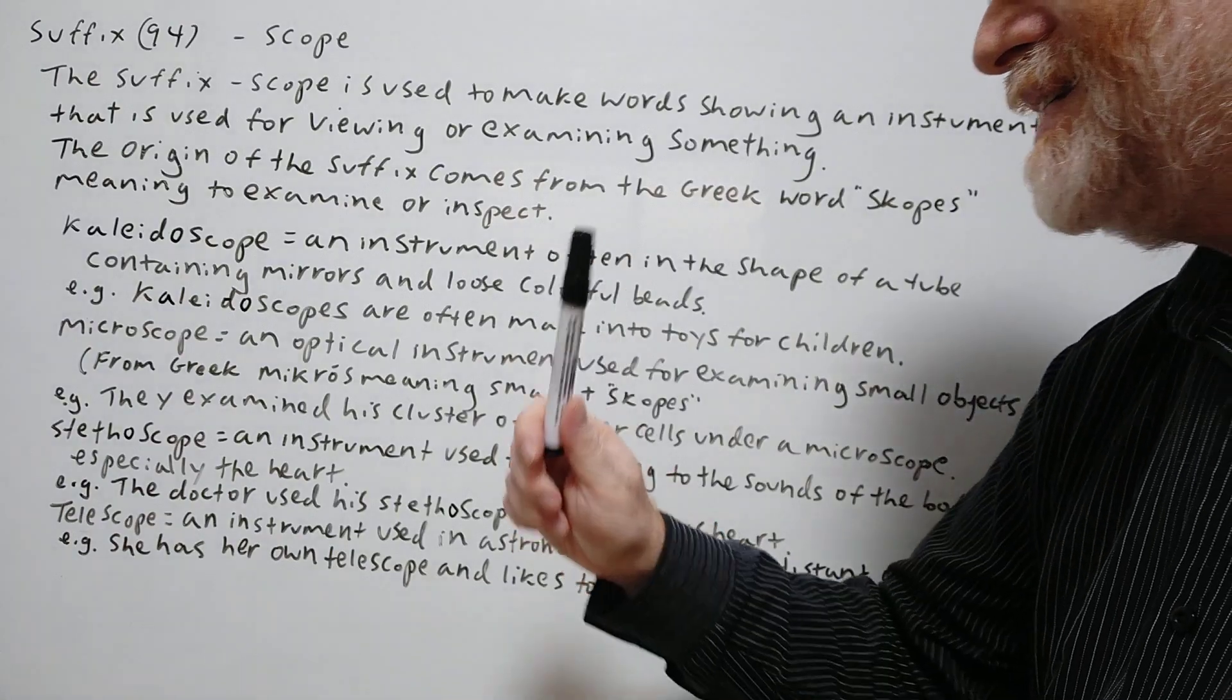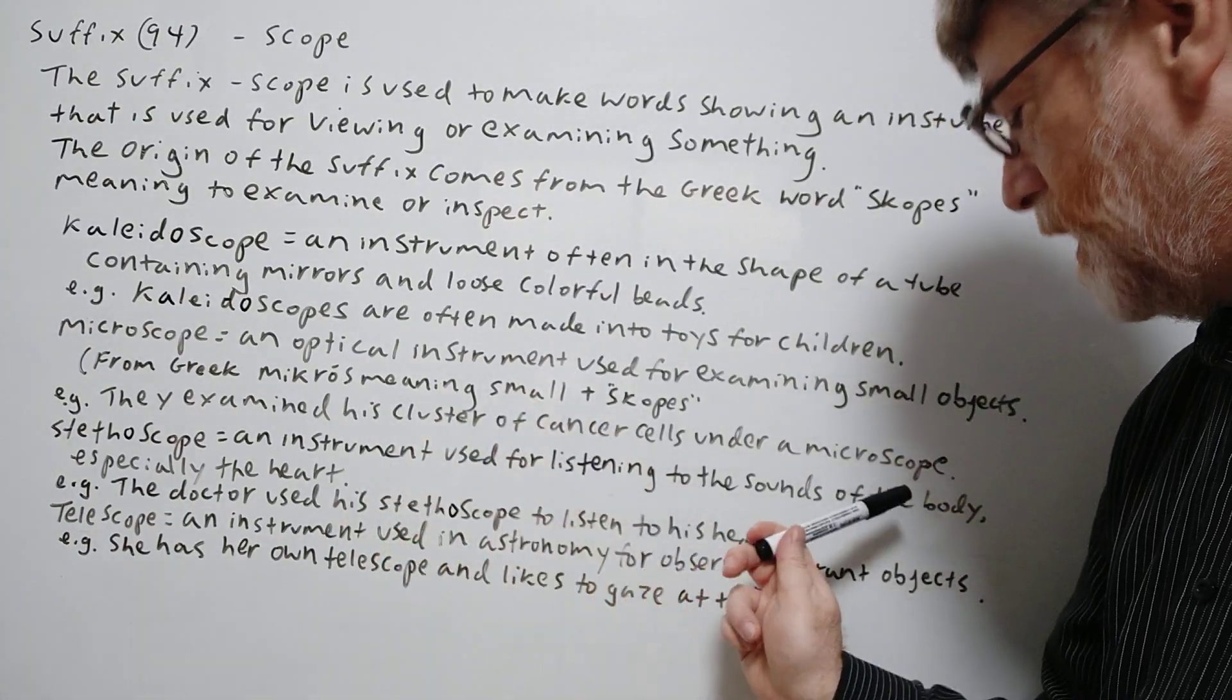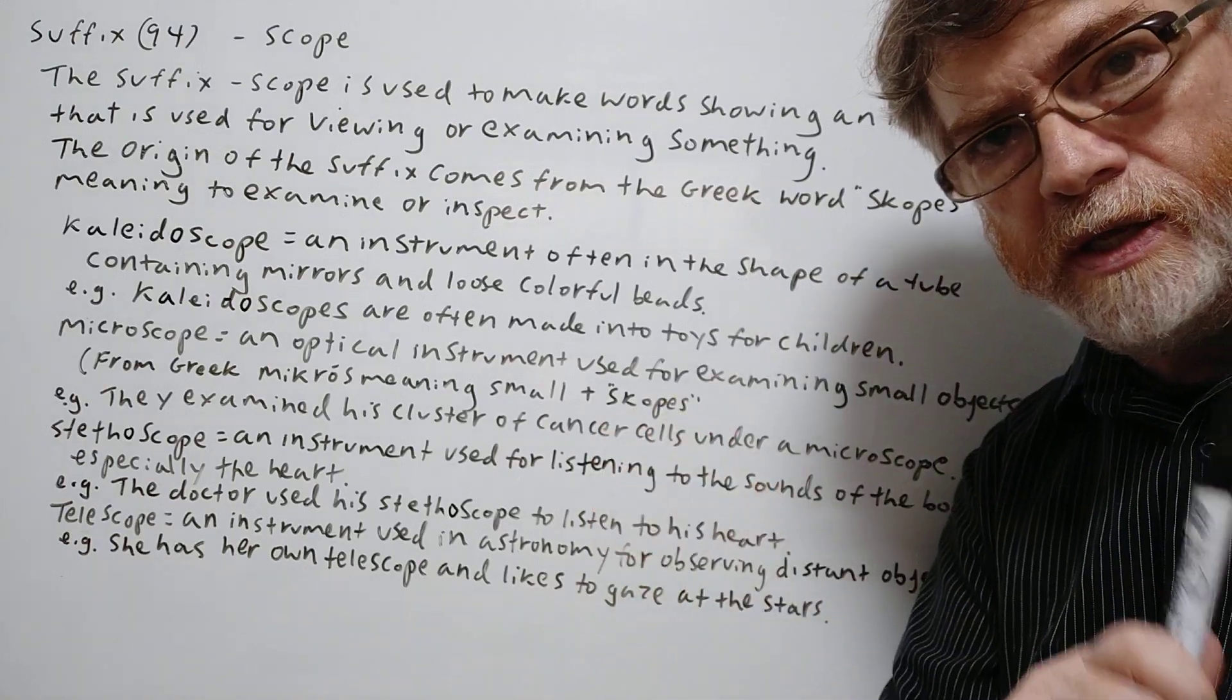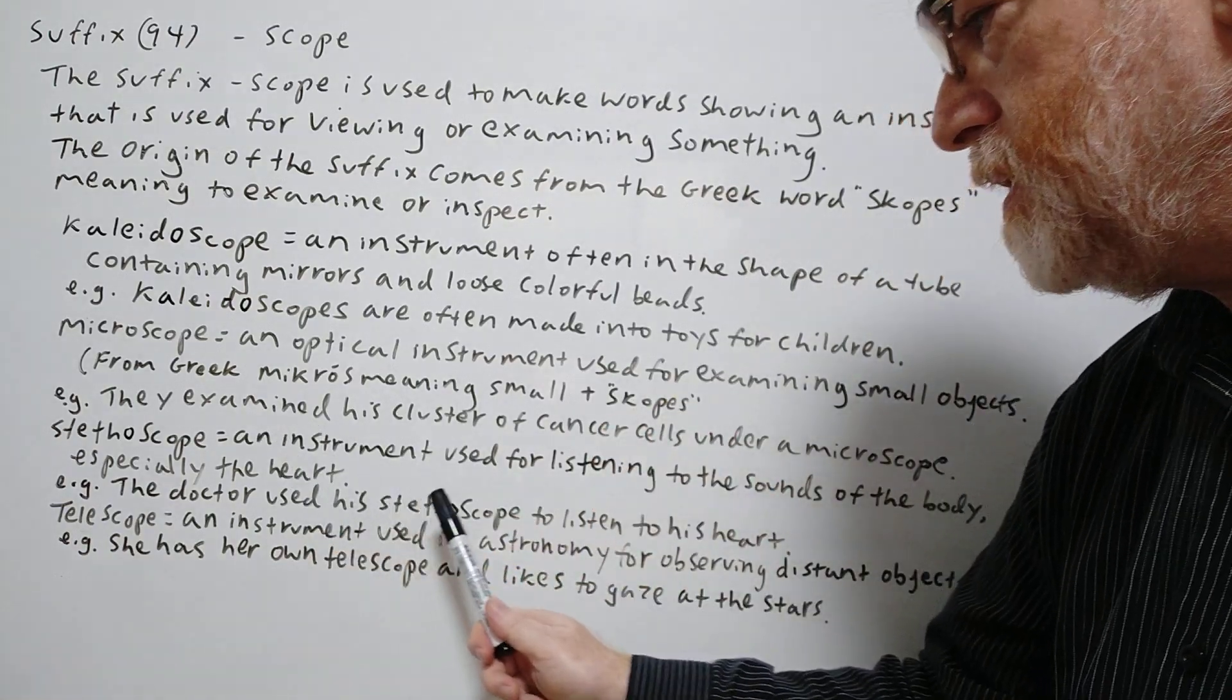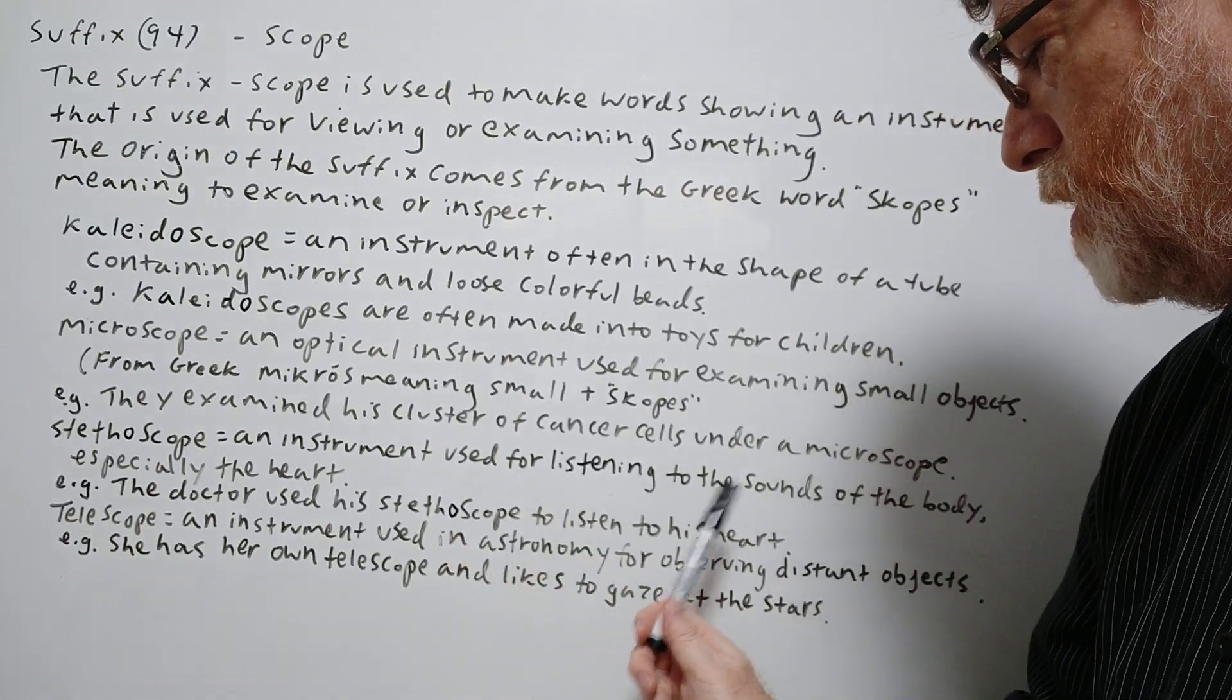The next one. A stethoscope. An instrument used for listening to the sounds of the body especially the heart. And here's our example. The doctor used his stethoscope to listen to his heart.